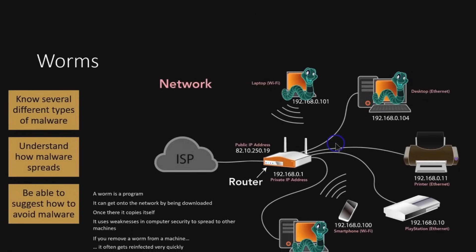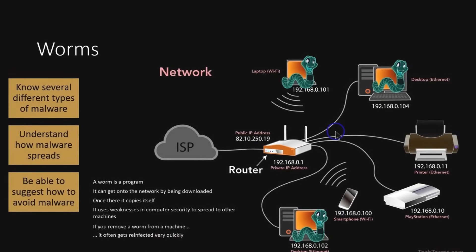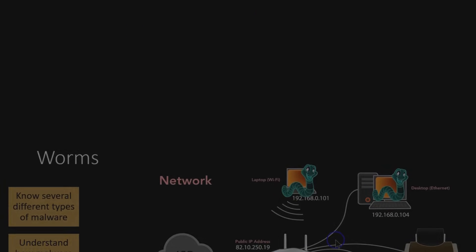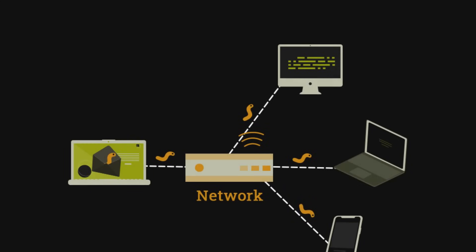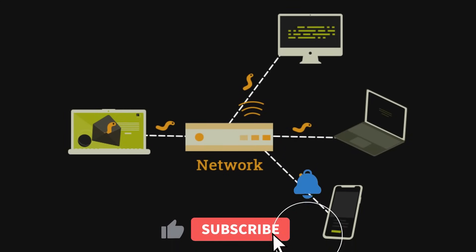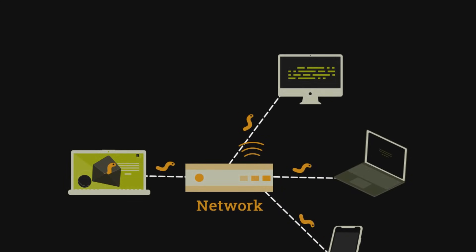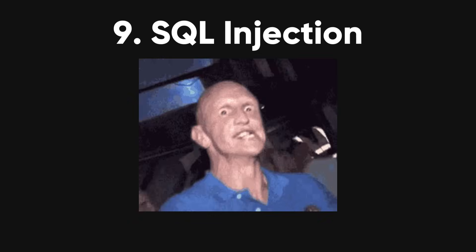Worms. Worms are programs that copy themselves and spread across networks without any help from you. They move from computer to computer, causing damage along the way, like a digital pest infestation.